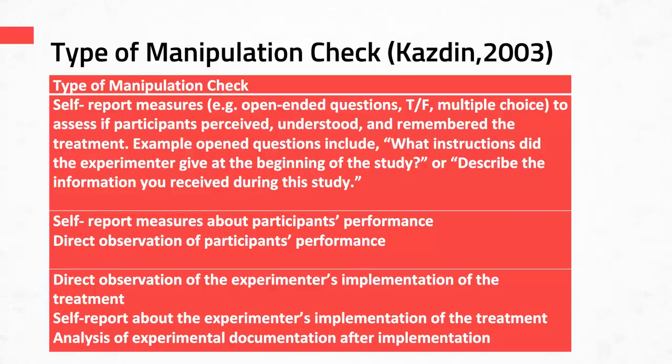You can also use direct observation, where you as the researcher go into the classroom or the area where the treatment or intervention is being implemented and observe what is actually being done. If it's an online class, you could ask for access to the online class, tutorials, or instruction to see how it's being implemented. Additionally, you can ask for self-report from the individuals actually implementing the treatment to explain how they implement it. There is also analysis of documents after the implementation of a specific treatment. These are just a few ways that you can perform manipulation checks.